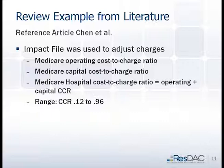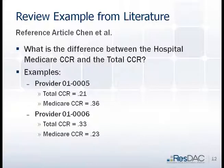As a summary of what Chen did: the impact file was used to adjust charges — operating plus capital. When I looked at the impact file, the range of cost-to-charge ratios by hospital was 0.12 to 0.96. Another question is: what's the difference between a Medicare-specific cost-to-charge ratio and a total all-payer hospital-level cost-to-charge ratio from Worksheet C? For one hospital in Alabama, the total all-payer cost-to-charge ratio was 0.21, while the Medicare-specific was 0.36.